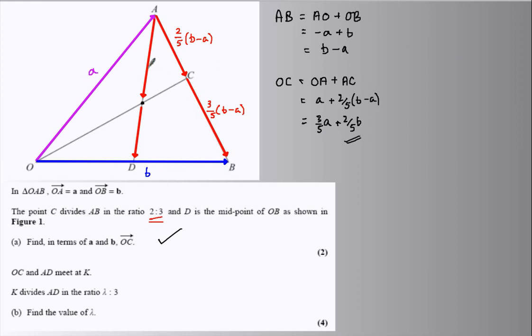Now the split is lambda to 3. In the same way I've got 2 fifths here, I'm going to say that this is lambda over lambda plus 3. That's the fraction, and this is 3 over lambda plus 3, and it's a fraction of the vector AD.